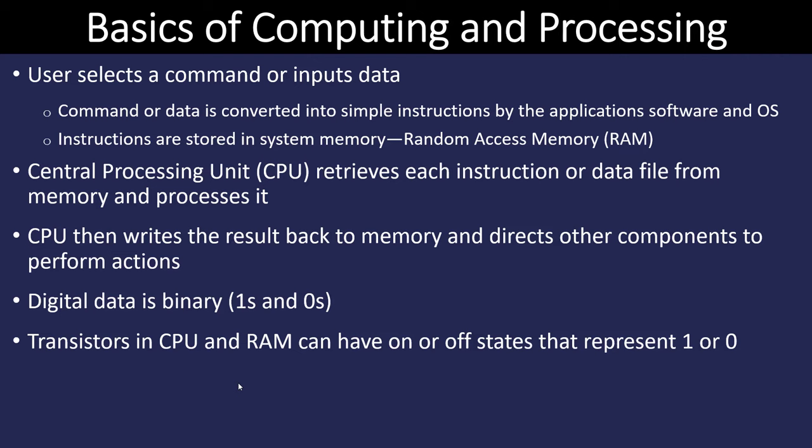The CPU and the RAM memory work together. Your program is in the RAM memory, and the CPU retrieves the instructions from the memory, processes them, and performs some kind of action. It could process data to render a picture on the screen, send information to the printer, or utilize the network and send information to another computer. The user starts the whole process via the graphical user interface, and clicking sends information to the RAM and then to the CPU.